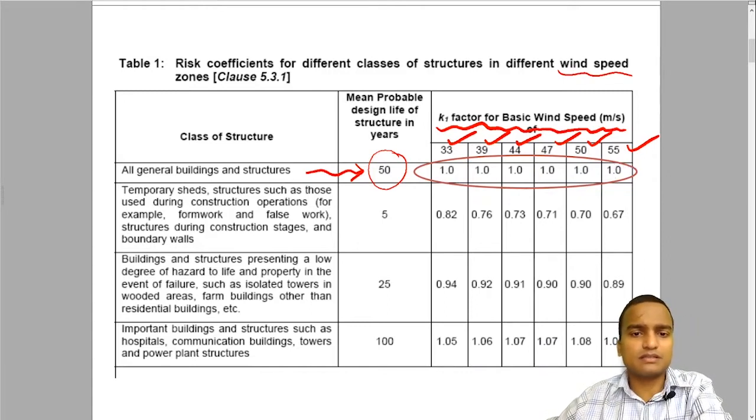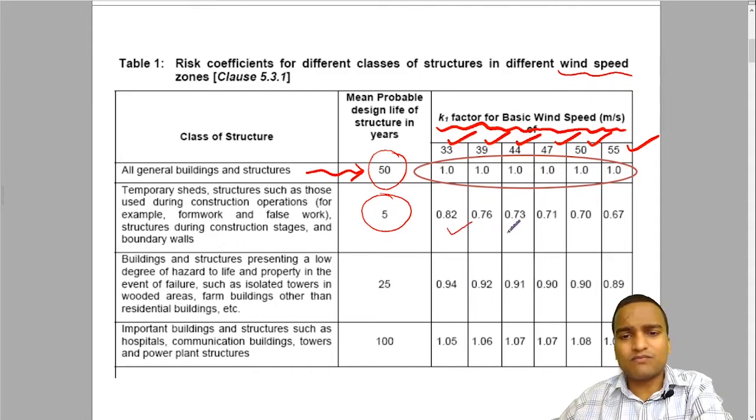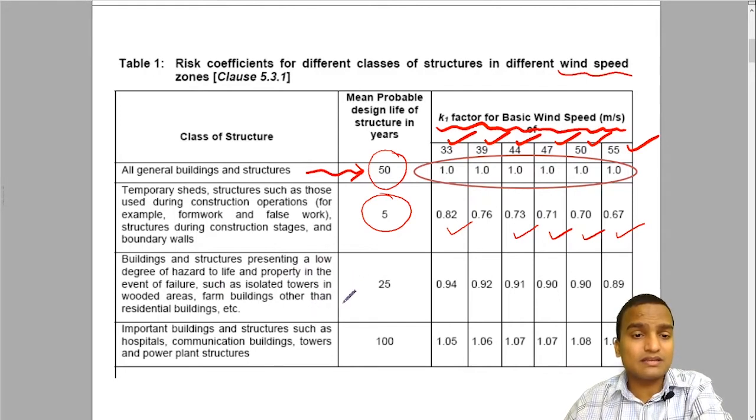For those structures, K1 will be one. Whereas for temporary sets structure such as those made during construction operations, frameworks like that whose mean probable design life is only five years, for them the K1 factor is even very less. Buildings presenting a low degree of hazard whose design life is only 25 years have little higher but again less than one.